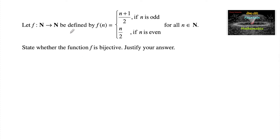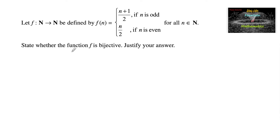Let f from N to N be defined by f(n) = (n+1)/2 if n is odd, and n/2 if n is even. For every natural number, state whether the function f is bijective and justify your answer. To check if f is bijective, we need to check 1-to-1 and onto. Let's check 1-to-1.